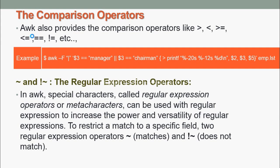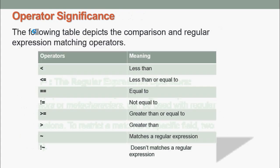The regular expression operators: In AWK, special characters called regular expression operators or metacharacters can be used with regular expressions to increase the power and versatility of regular expressions. To restrict a match to a specific field, two regular expression operators are used: one for matches (~) and the other for does not match (!~). The following table depicts the comparison and regular expression matching operators.